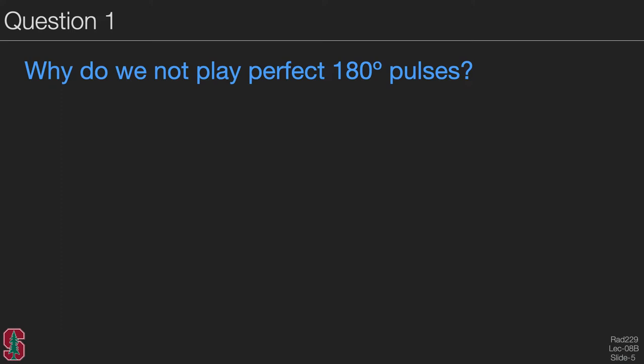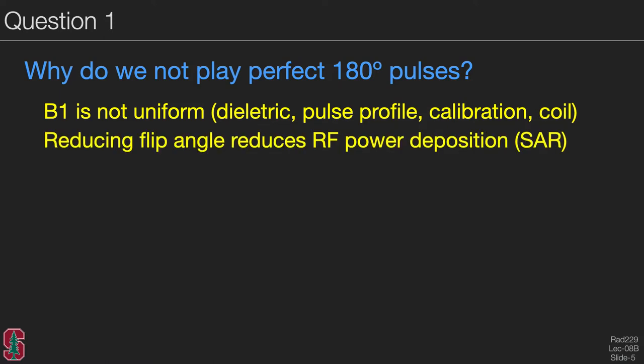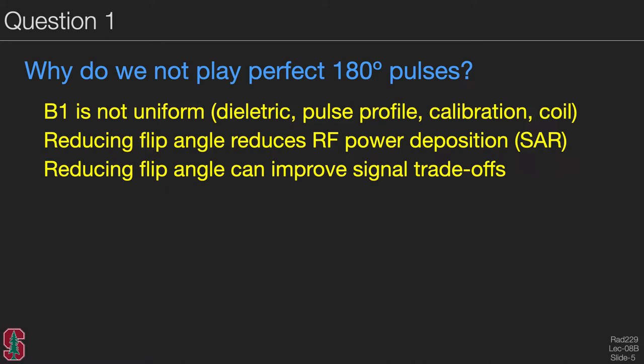The first question is: why do we not play perfect 180-degree pulses? There are multiple reasons. First, the transmit B1 is often not uniform because of dielectric effects, pulse profiles, calibrations, or transmit coils. Reducing the flip angle reduces the RF power deposition, or SAR, and especially at higher field strengths such as 3T or higher, this is essential in order to comply with safety regulations. Finally, reducing the flip angle can actually produce desirable effects where we can improve the signal trade-offs.